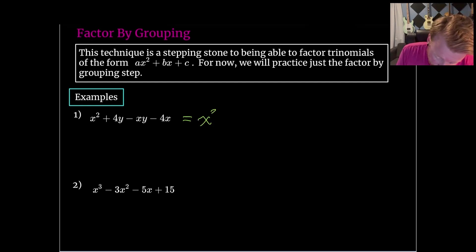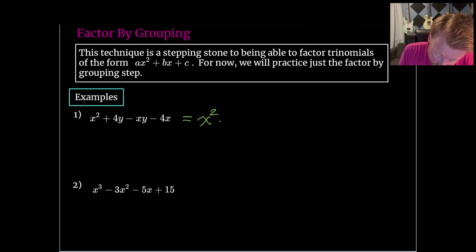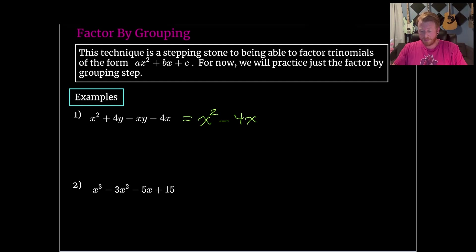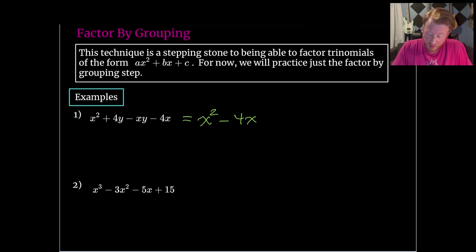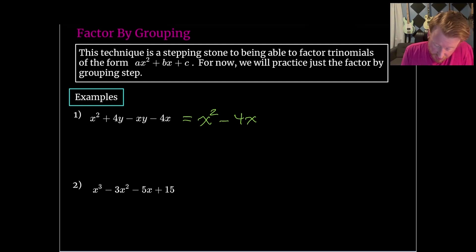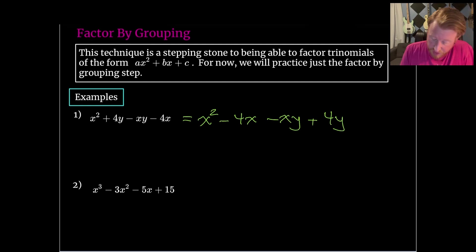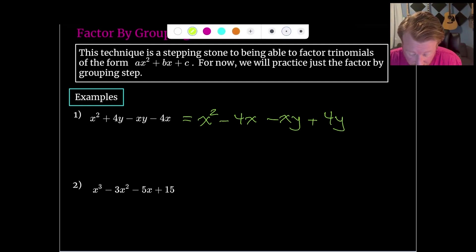We'll start with x². It might be beneficial to rearrange the way things look here. I think I will put 4x next, and with time it becomes more clear how you should group these things together — you start to see the pattern unfolding. So that'll be our first grouping. And for our next grouping, we need minus xy and then plus 4y. Now we've got terms with things in common next to each other.